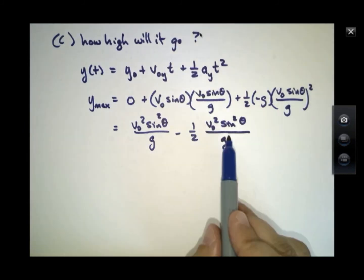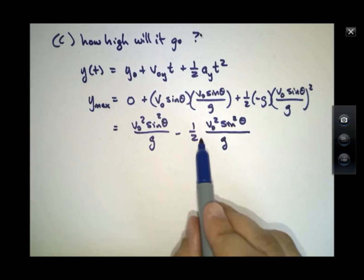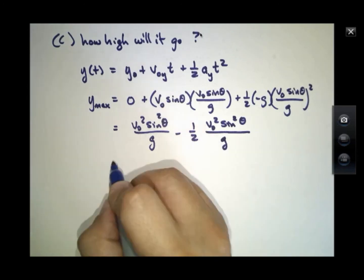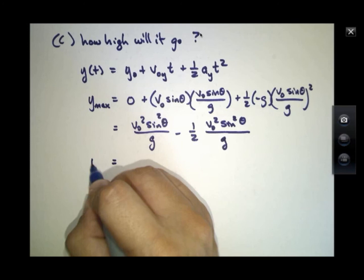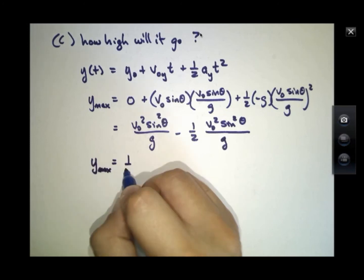And notice this thing is the same as that. I have a half, so I have something minus a half of something, which gives me this.